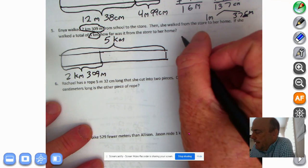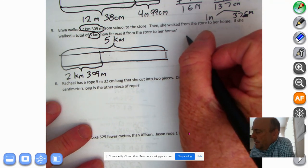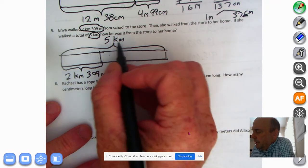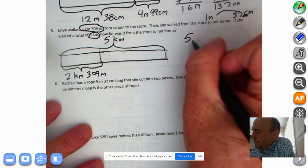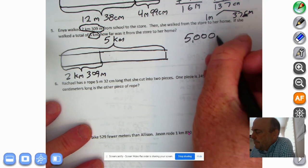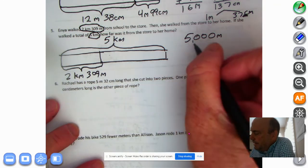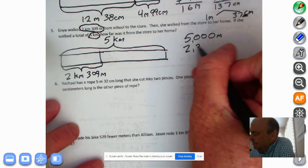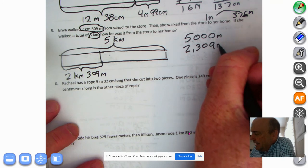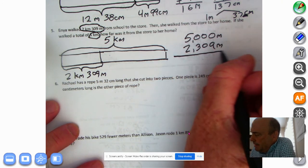What simplifying strategy should we use? Let's just turn this into 5,000 meters. And we'll just subtract this. That'll be 2,309. I like that simplifying strategy. Thank you, Mathemat. And here we go.